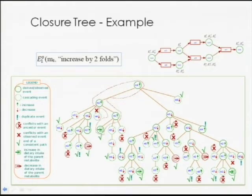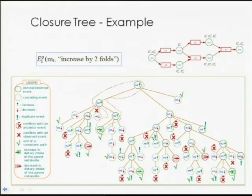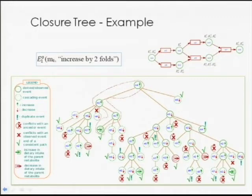An audience member asked: what is the difference between a derived event and a cascading event? Events are either observed or derived through our three different types of rules. A cascading event simply says that within the subnetwork, if this is the source of all these molecules, then if this increases, all of them will increase. A derived event is something that might result in the given event — it looks backward at what might have caused it.